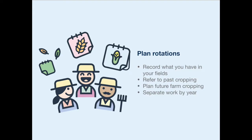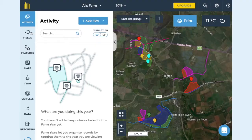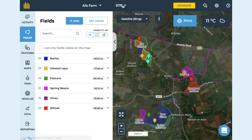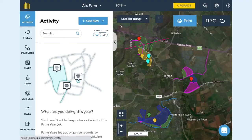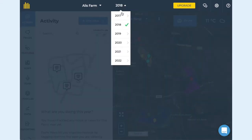Once this is set up you will be able to look backwards and forwards to see what was happening in your fields. Farm years don't have a start and end date so they can be used in the way that works for your farm. For example, you could align them with your annual harvest or your accounting year.